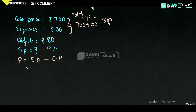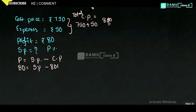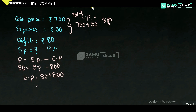Now we have to find selling price. Profit is 80 rupees and cost price is 800. Selling price will be equal to profit plus cost price, that is 80 plus 800. So selling price will be equal to 880 rupees.